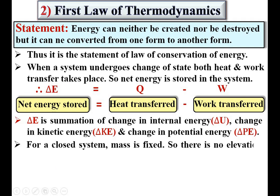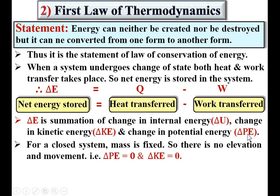For a closed system, mass is fixed, so there is no elevation and no movement. No elevation means there is no change in potential energy; no movement means no velocity, so change in kinetic energy is zero. Therefore, for a closed system, delta E equals delta U only, because both the kinetic and potential energy terms are zero. So for a closed system: delta PE = 0 and delta KE = 0, which means delta E = delta U, and since delta E = Q minus W, we get delta U = Q minus W.